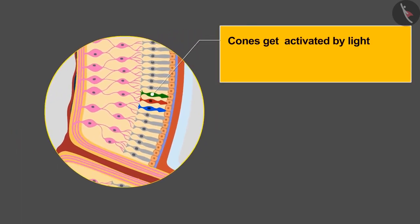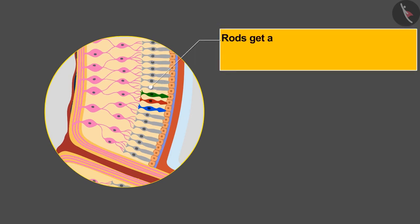Cones get activated by the light, due to which we are able to see different colors. And rods get active in low light, due to which we see all objects in black or white.